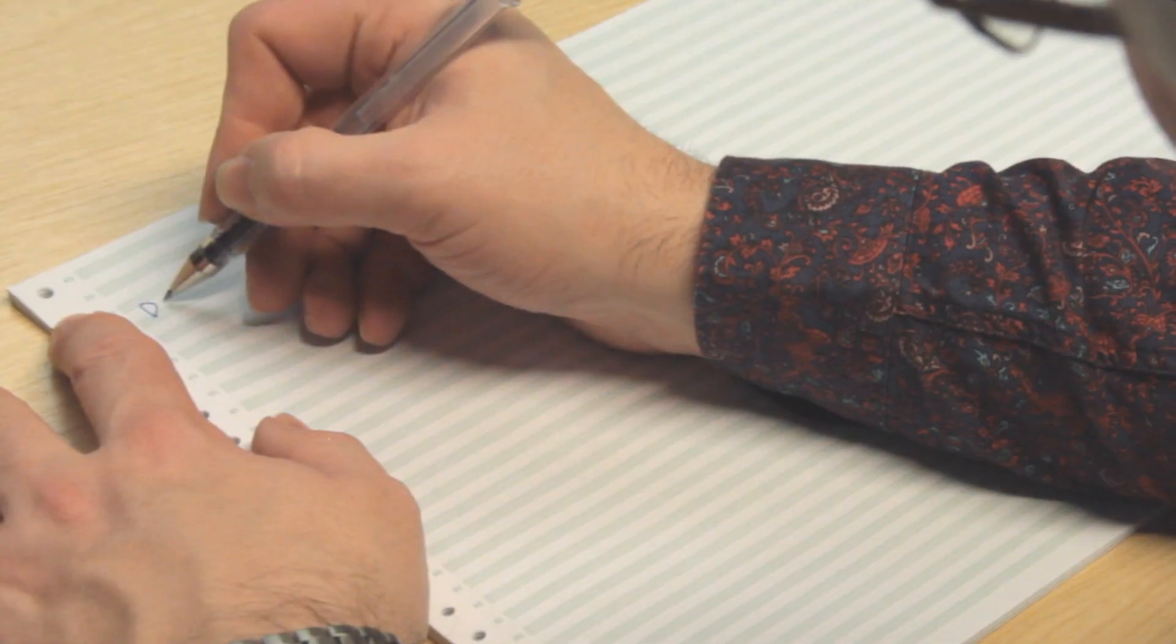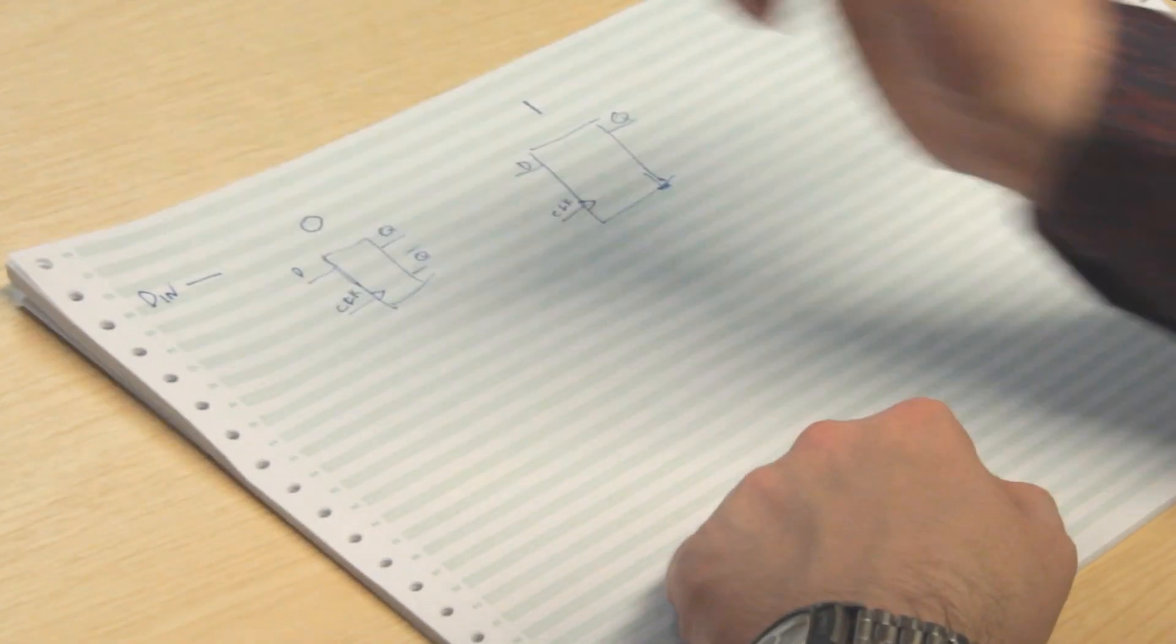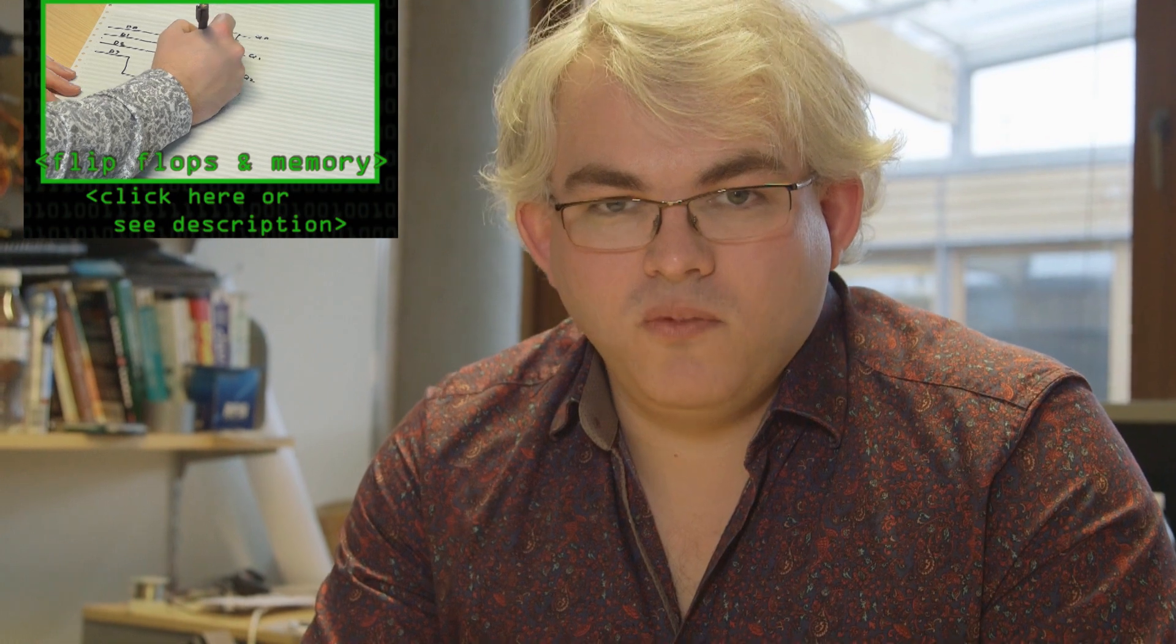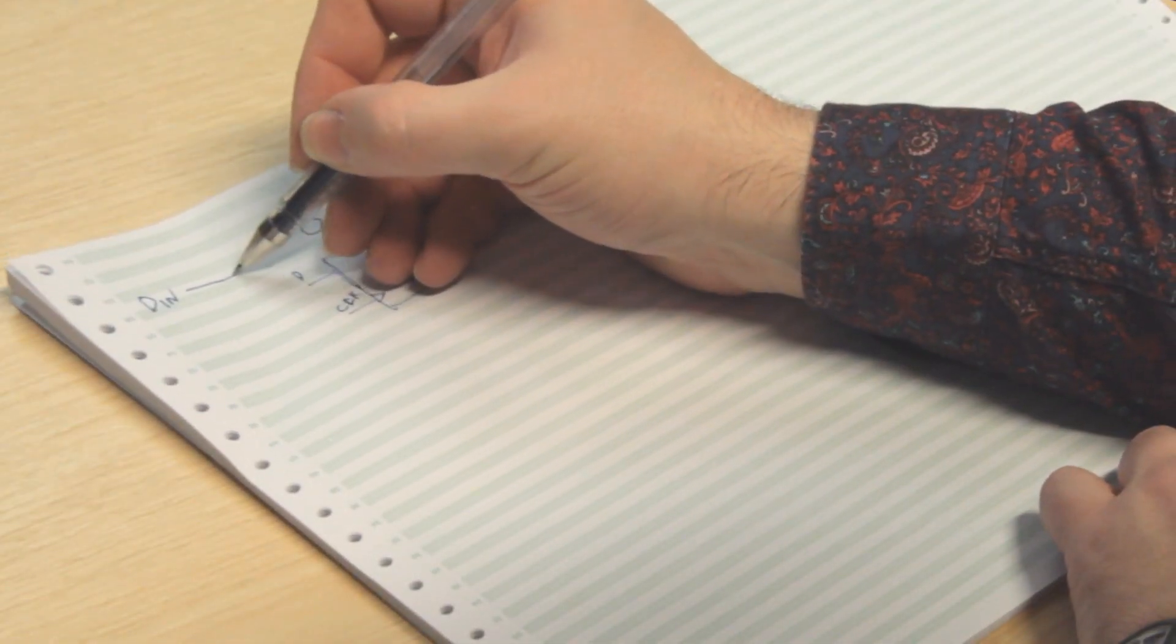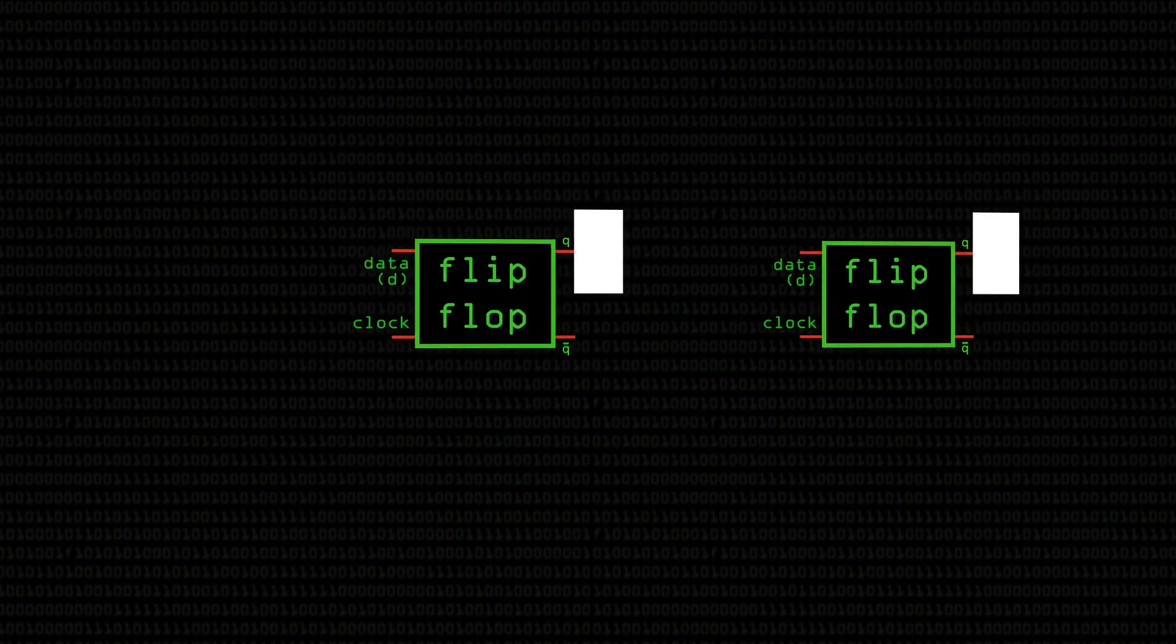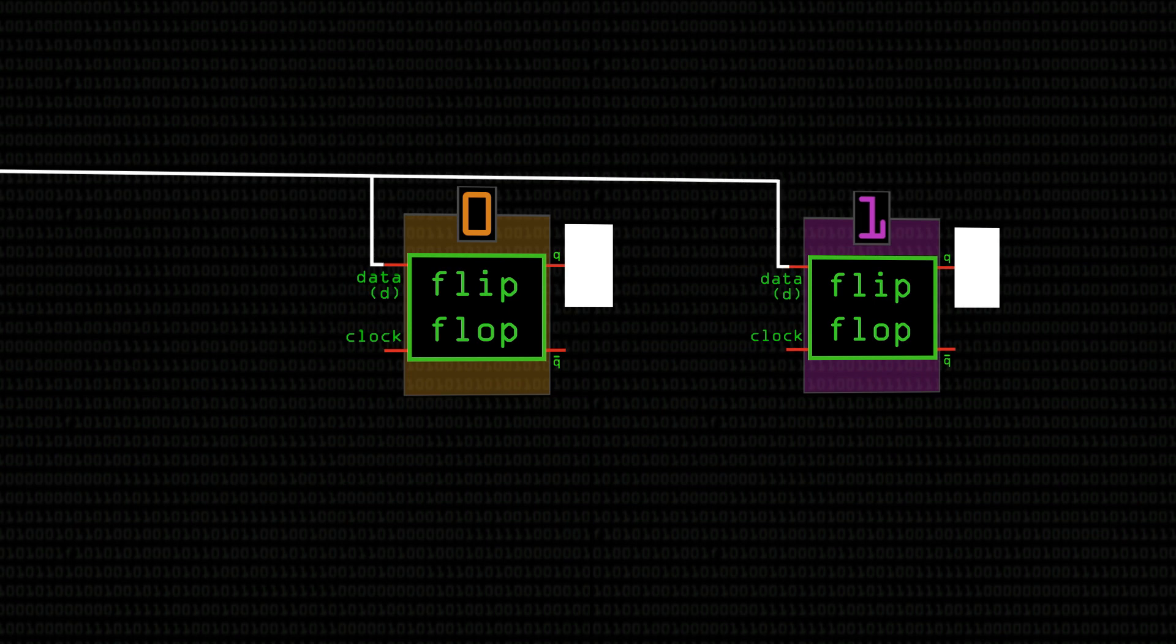Well, the first thing I'm going to do is I'm going to have a data input, which I'm going to call DIN here, and that's where we're going to put our signal. Now, if we think about how flip-flop works, they only change the value they store when we strobe the clock input. So actually, we can connect the input directly to the input of the first flip-flop, and we can also connect it directly to the input of the second flip-flop, like so.